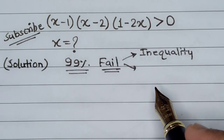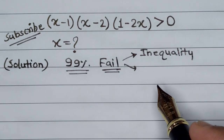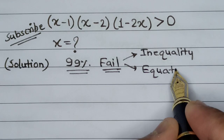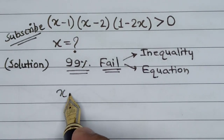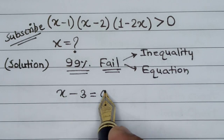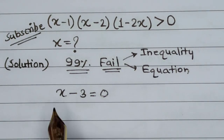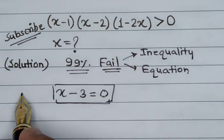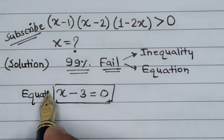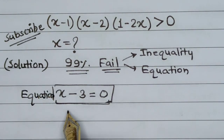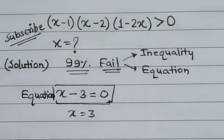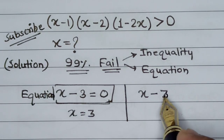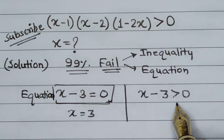In maths, we basically have two types of equations. Suppose if I have a situation where x minus 3 is equal to 0, this is known as an equation and it is fairly simple to solve — the value of x will be equal to 3. But the challenge lies in problems where x minus 3 is greater than or less than 0.